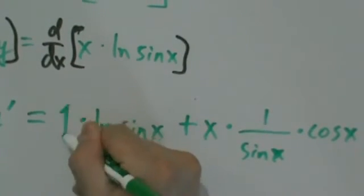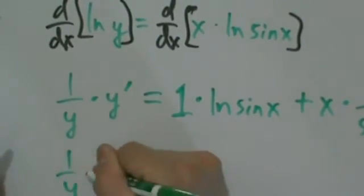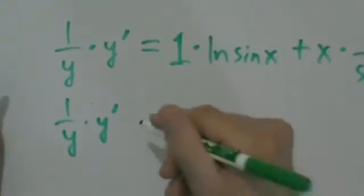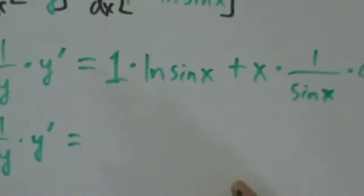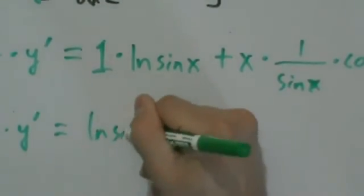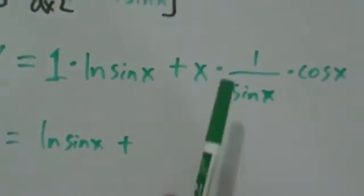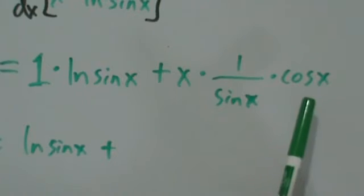This is a one over here. One over y times y prime is still on the left side. On the right we can simplify - one times natural log of sine of x is just natural log of sine of x. Here x times one over sine of x times cosine of x is the same thing as cosine over sine then times x.